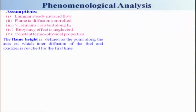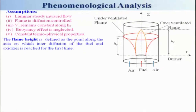We now define flame height. The flame height can be defined as the point along the axis at which inter-diffusion of fuel and oxidizer reaches the flame surface for the first time. For an overventilated flame — a fuel jet in open air — the flame height HF is the distance from the base to the tip of the flame.